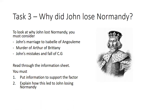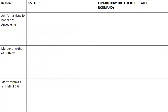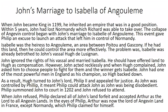We're going to imagine a 12-marker: 'Explain why John lost Normandy by 1204.' We have three paragraphs: John's marriage to Isabella of Angoulême, the murder of Arthur of Brittany, and John's mistakes and the fall of Château Gaillard. For a revision task, in one column write three to five history facts, and in the next column explain how each led to the fall of Normandy. You could also do a spider diagram.